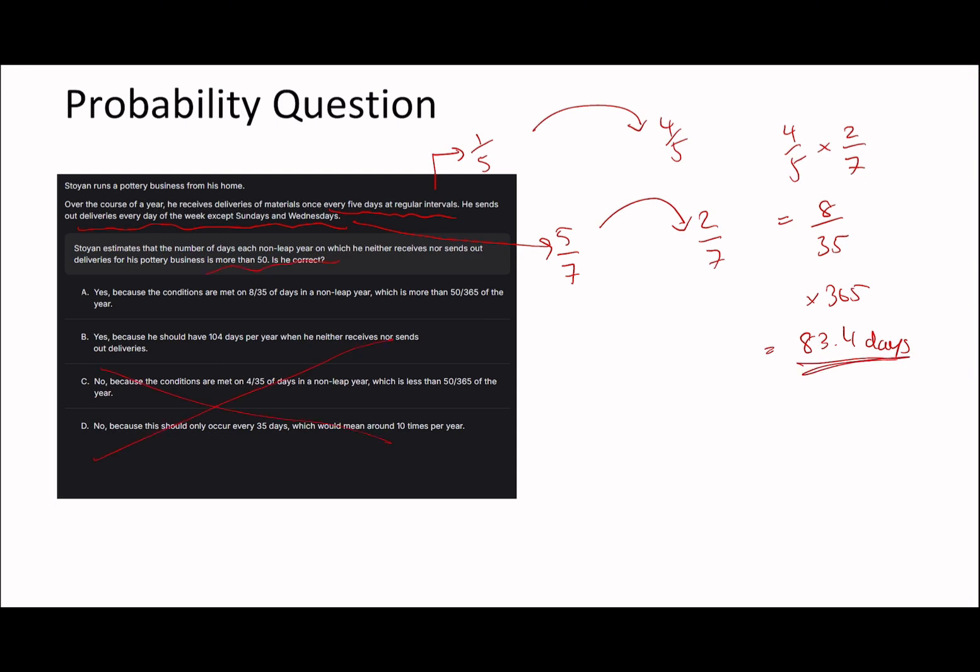So therefore, is more than 50, is he correct? I would say yes. And B says he should have 104 days. That's wrong. A is right, because you can see we have the figure that we worked out. So once again, not necessarily too hard of a question, I don't think. It's just about focusing in on the right material. And so here it was the fact that he neither receives nor sends, so you have to use the opposite value. I hope that makes sense.